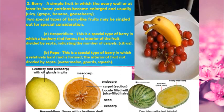Pepo is another special type of berry in which a relatively hard rind is formed. The interior of the fruit is not divided by septa — unlike hesperidium. It is seen in watermelon, gourds, and squash.